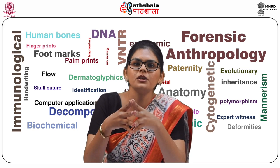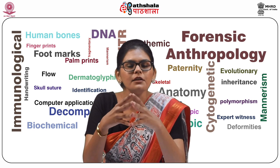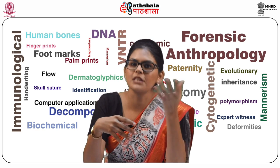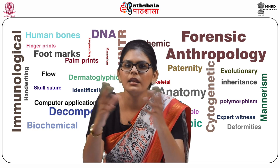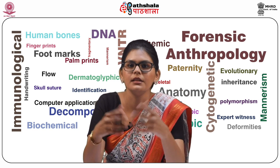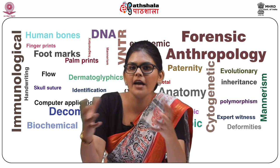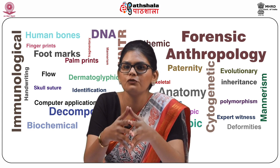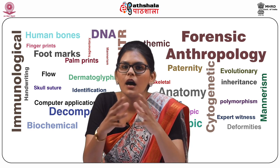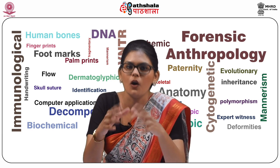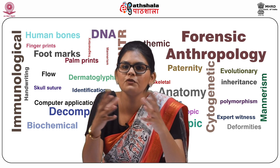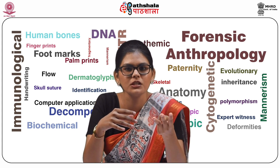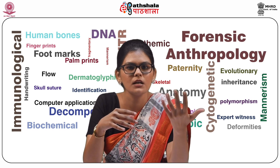Identification by anthropometry involves taking measurements such as standing height, sitting height, length and breadth of the head, the length of the right ear, span of the outstretched arm, and length of the left foot. Under somatoscopy, identification is based on observation of the living such as hair, eyes, complexion, shape of the nose, ears, and chin.